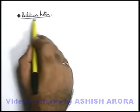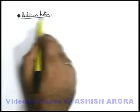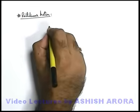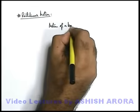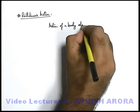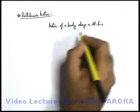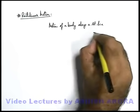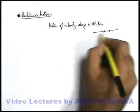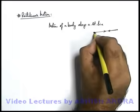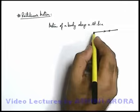Now we'll start the topic of rectilinear motion. Rectilinear motion can be directly written as motion of a body along a straight line. When a body moves along a straight line either forward or backward, in either direction when a body moves along a straight line, this motion we simply call as rectilinear motion.